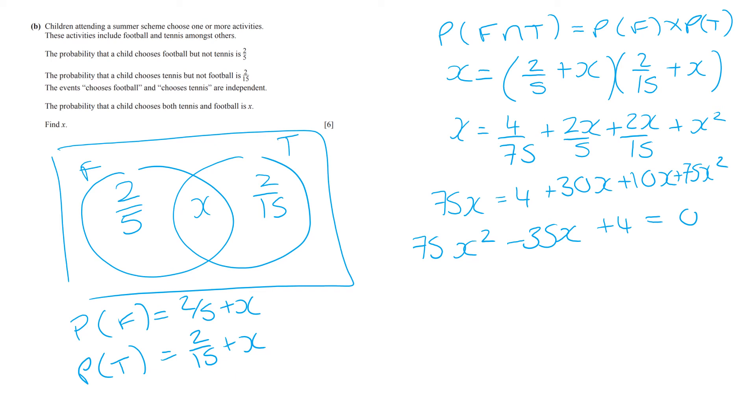Now I'm going to be happy to factorise. You can use the quadratic formula. You will not get marks deducted by using one method or the other. And that gives me that 15X minus 4 equals 0, X equals 4 fifths. Or I have that 5X minus 1 equals 0, X equals 1 fifth.